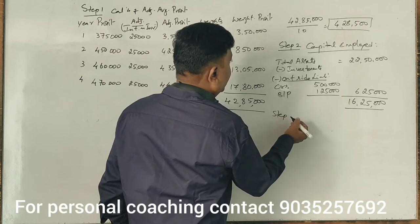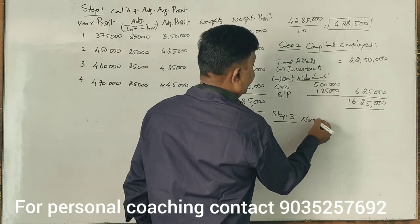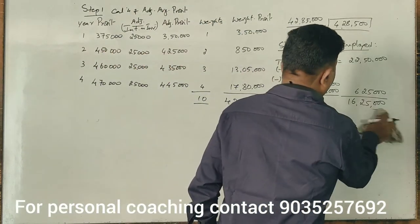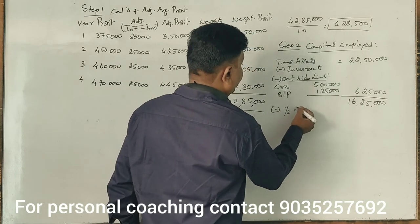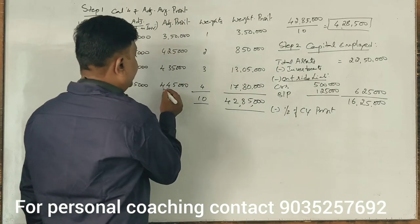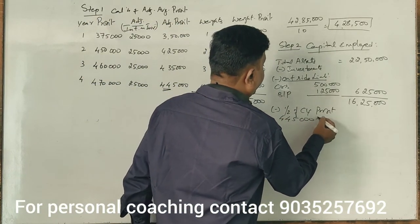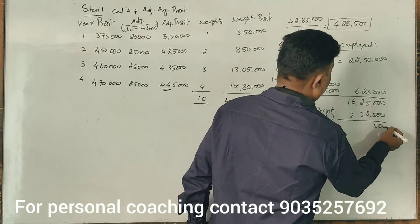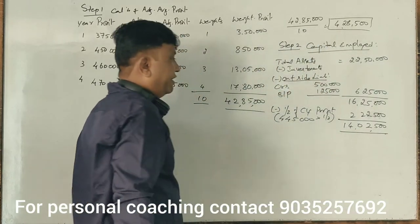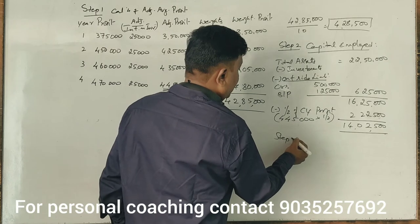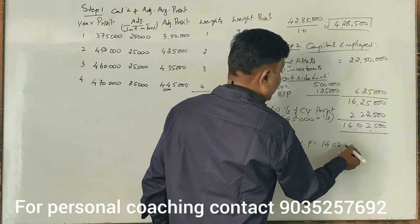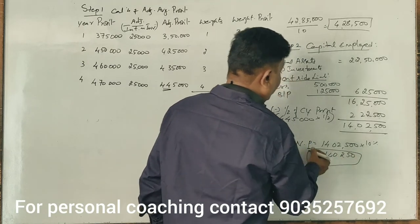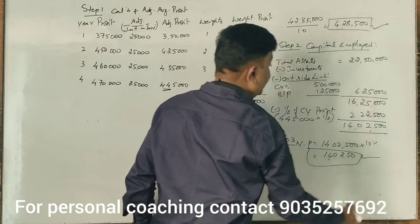Step 3: Normal profit. Capital employed is ₹16,25,000 at a normal rate of return of 10%. Normal profit = ₹16,25,000 × 10% = ₹1,62,500.